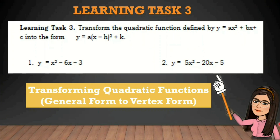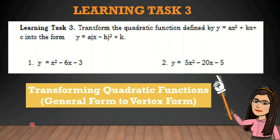Let's proceed to learning task number 3: transform the quadratic function defined by y equals ax squared plus bx plus c into the form y equals a times quantity x minus h squared plus k. There are two examples here that you will solve. I will give an example wherein we are going to transform a quadratic function from general form to standard or vertex form. But before that, let us first be familiar with the general form and standard or vertex form of quadratic function.